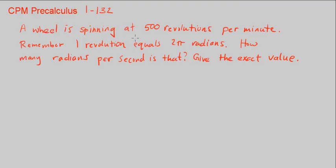A wheel is spinning at 500 revolutions per minute. So we have a wheel here, and it's spinning at 500 revolutions per minute. That means every minute it goes around in a complete circle 500 times. A revolution is just going in a circle.